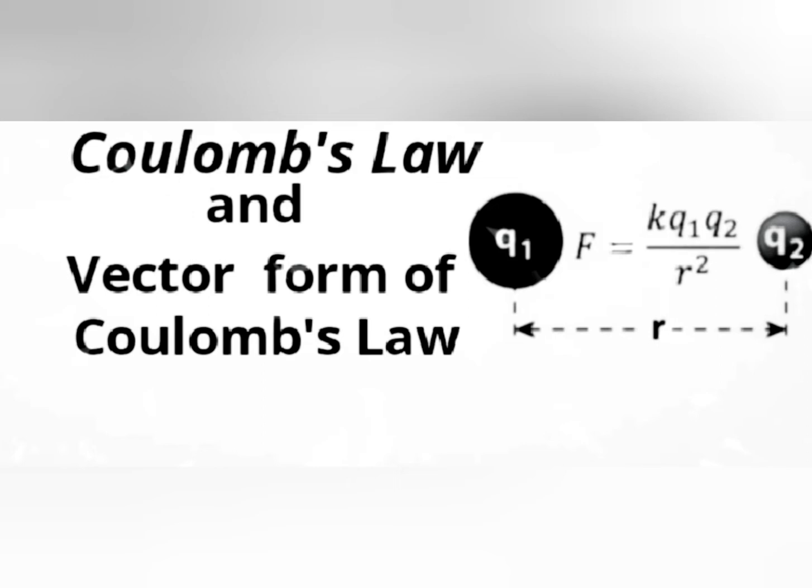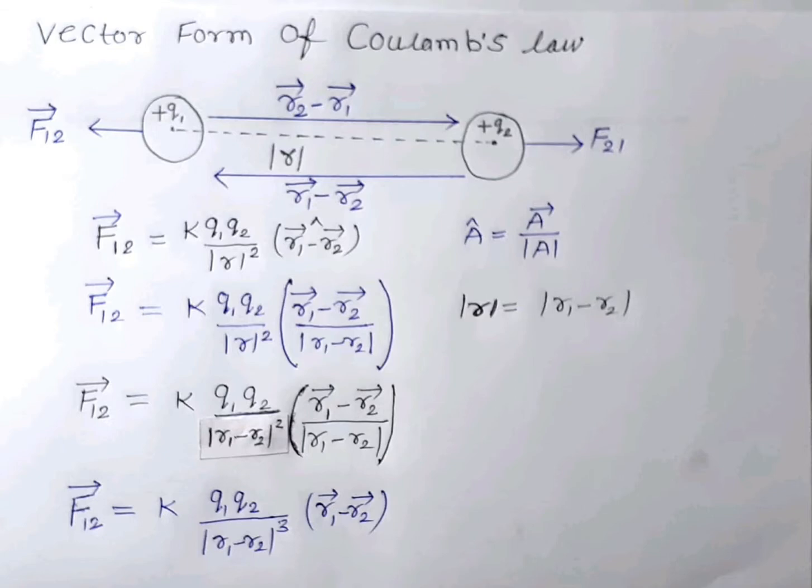Let us consider this figure. If we have two point charges q1 and q2, and the distance between them is |r|, then the force on q1 due to q2 is F12 vector, and the direction of force is r1 vector minus r2 vector, which means final position minus initial position.